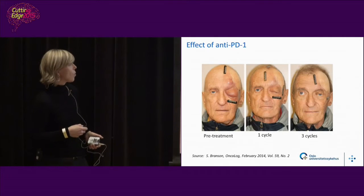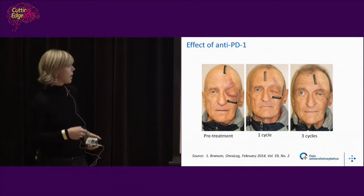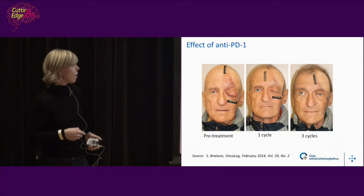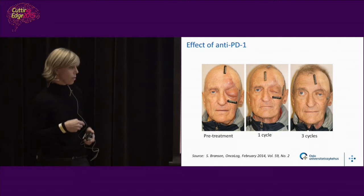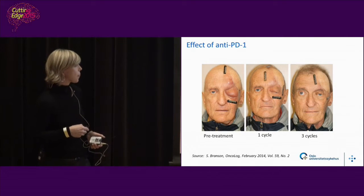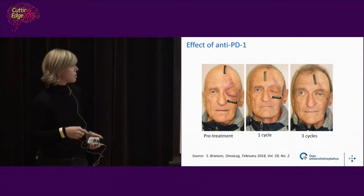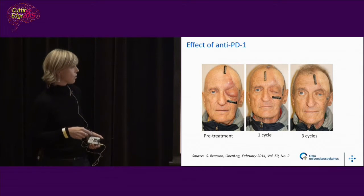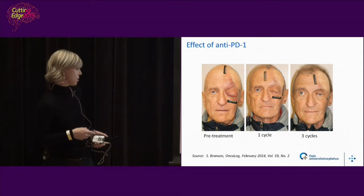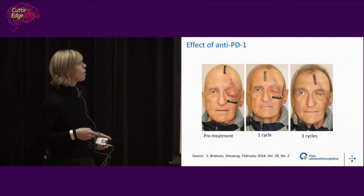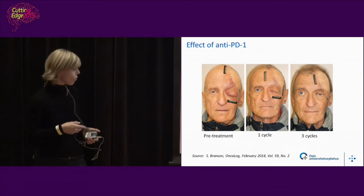In some patients, this has shown real effect. This patient was resistant to all other treatments — chemotherapy and another antibody. It's a melanoma patient, and after one cycle with the anti-PD-1 antibody, the tumor had already started to regress. After three cycles it had improved a lot. We are seeing this more and more.